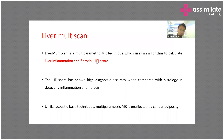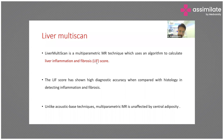Multi-parametric MRI is an alternative to liver biopsy. It has high diagnostic accuracy when compared with histology in the detection of inflammation and fibrosis. An important advantage is that it is not affected by central obesity; however, cost is an important limiting factor.